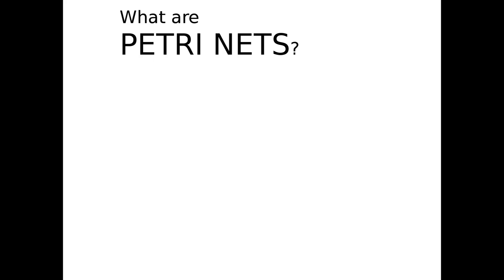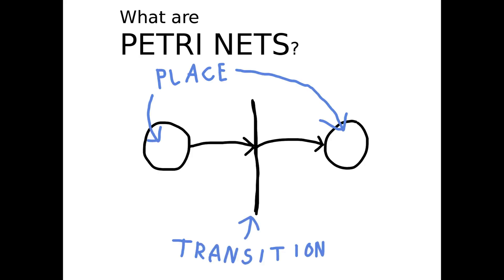Petri nets are a popular modeling formalism related to data flow. They have two types of elements: places and transitions.